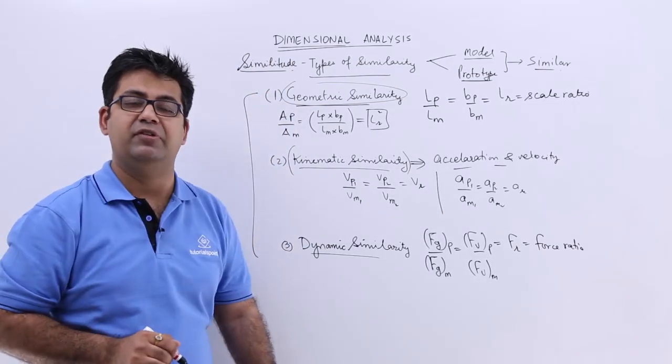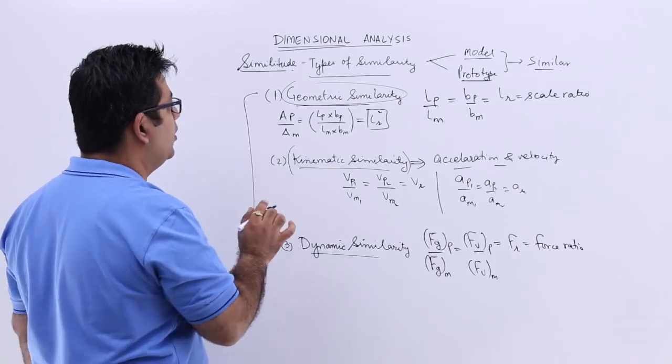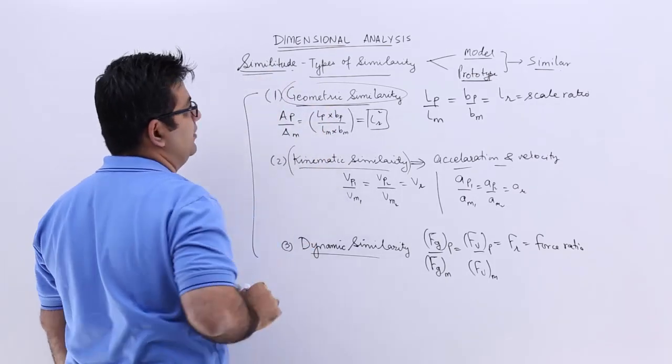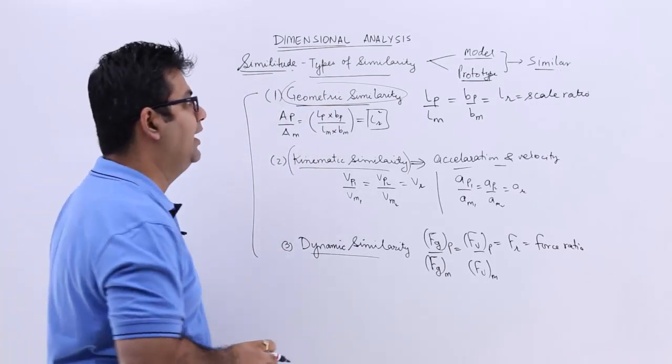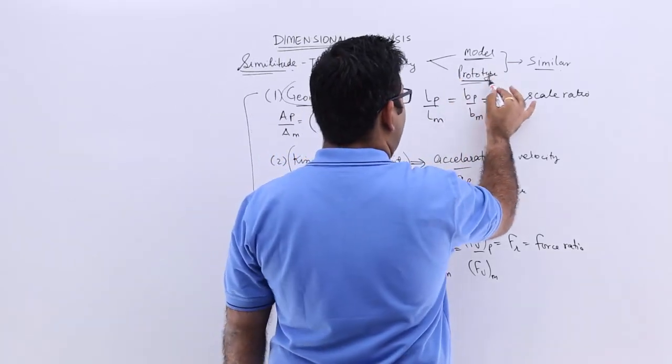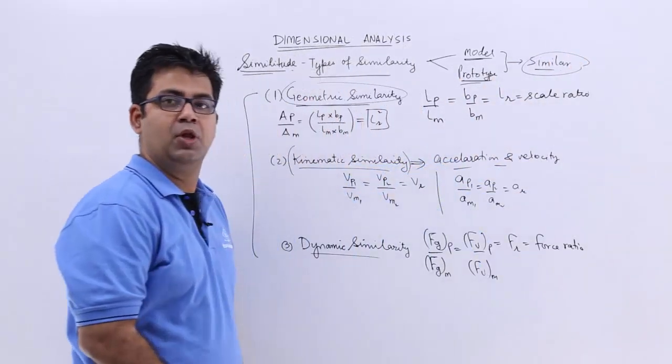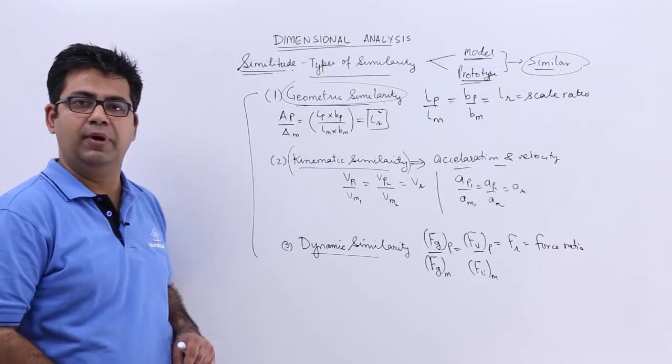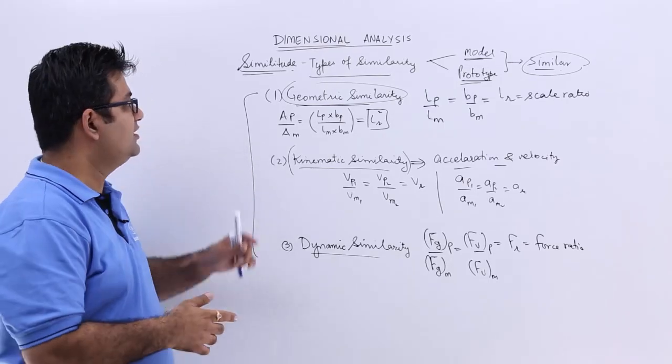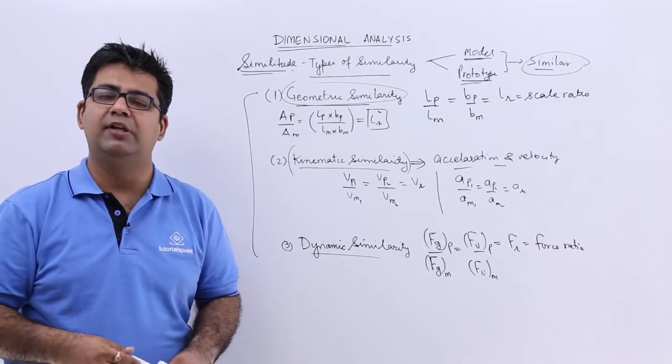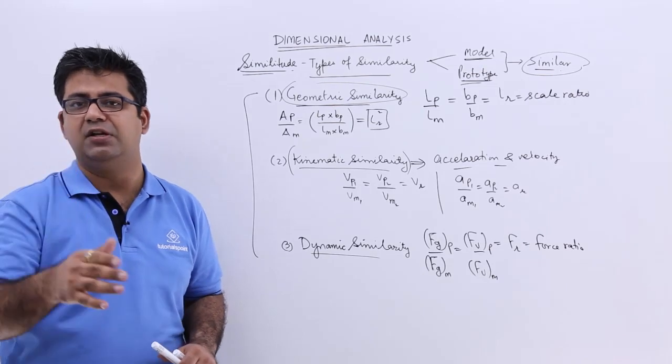These are the three kinds of similarities that you should know about in the topic of similitude, which says that a model and a prototype have to be similar on these three grounds. So I hope you got this idea, now let's move on to the next video and talk about the dimensionless numbers.